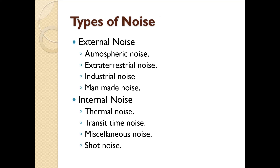So what are the types of noises? One is external noise and another is internal noise. In external noise there is atmospheric noise, extraterrestrial noise, and man-made noise. In internal noise there is thermal noise, transit time noise, miscellaneous noises, and shot noises.